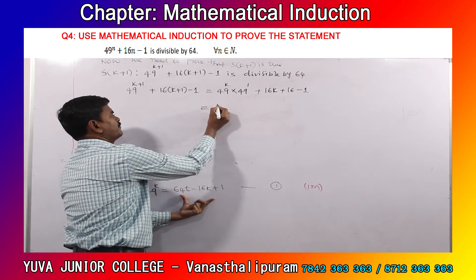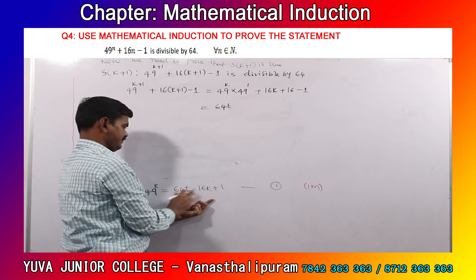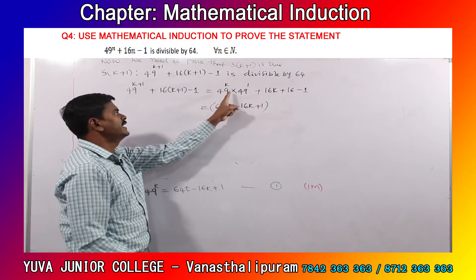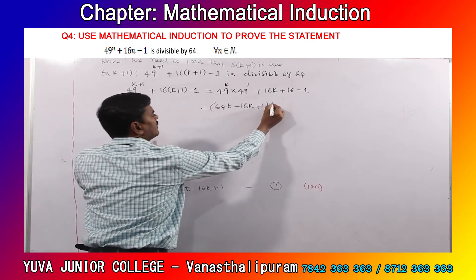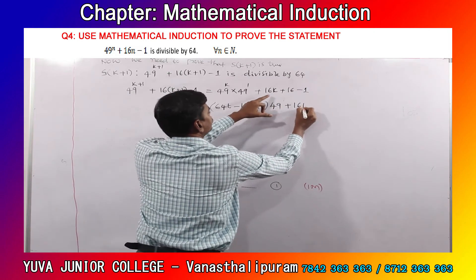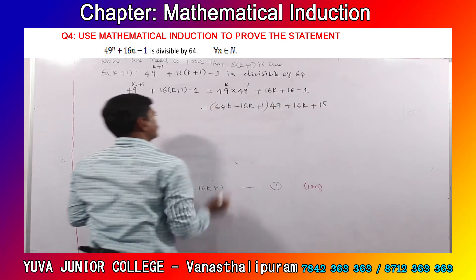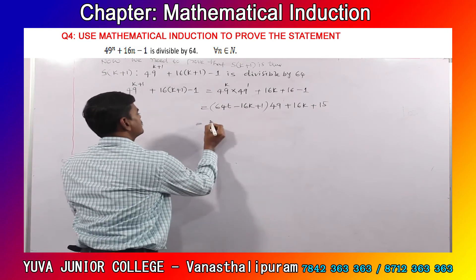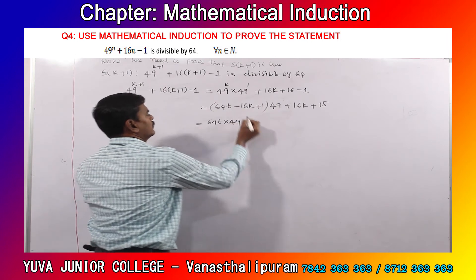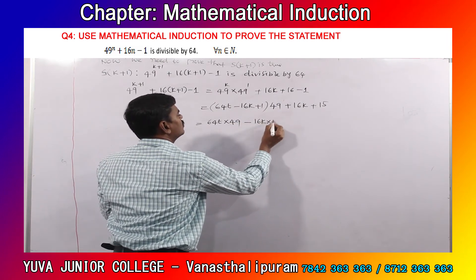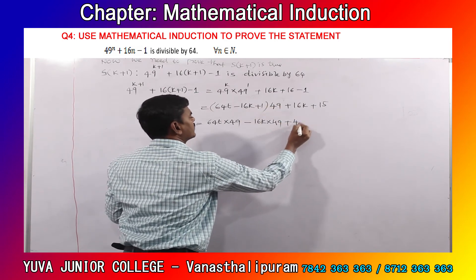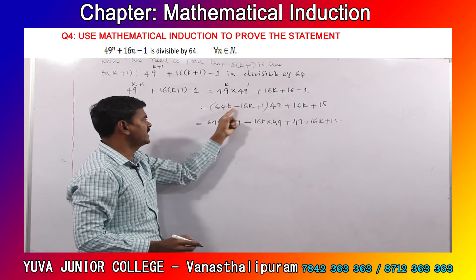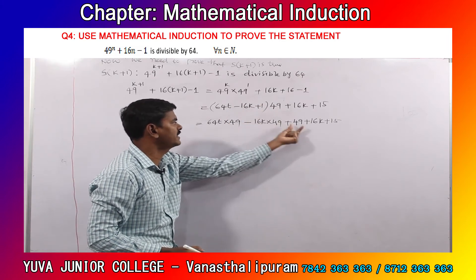In place of 49 power k, write (64t minus 16k plus 1), kept in brackets, into 49. Plus 16k plus 16 minus 1, which is 15 as it is. Now multiply: 64t into 49, minus 16k into 49, plus 1 into 49 (which is 49), plus 16k, plus 15.